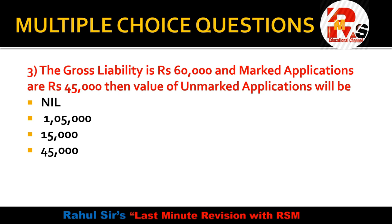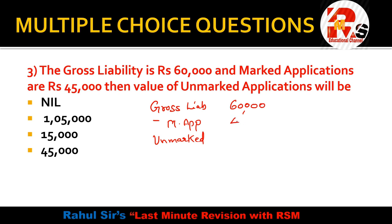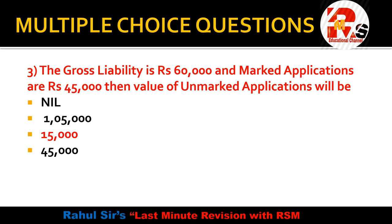Question 3: The gross liability is Rs.60,000 and marked applications are Rs.45,000. What is the value of unmarked applications? Using the formula: Gross liability minus Marked applications = 60,000 minus 45,000 = Rs.15,000. So the right answer is Rs.15,000. This type of question can also be expected in the exam.